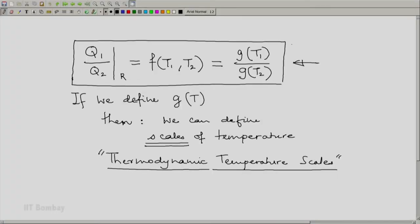A while ago we noticed that if we use this relation for defining scales of temperature using a reversible 2T engine or even refrigerator, then we will get a scale of temperature which is a thermodynamic temperature scale. There is a certain amount of arbitrariness in this because this function g of temperature is yet to be defined. Let us now define that in a simple way and then we will come to one specific scale which we will call the thermodynamic Kelvin scale of temperature.